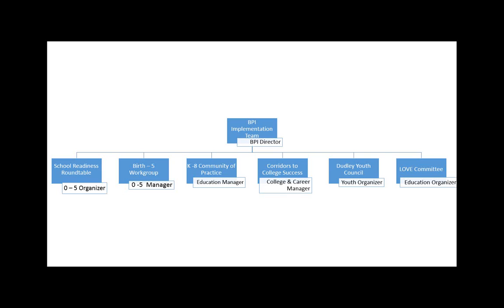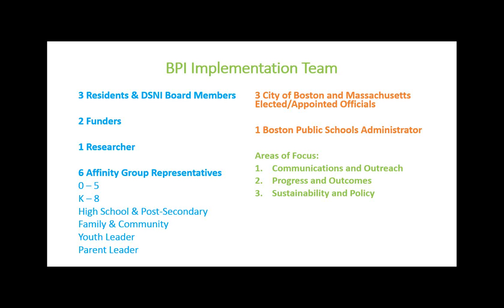That team has the charge of continuing to move Promise forward. It's separate from the actual DSNI board because the board is charged with governing all of DSNI — including our land trust work, housing advocacy, and more — whereas the implementation team is specifically looking at Promise indicators as well as our own indicators to assess whether we are being successful. It does that through three particular focus areas: communications and outreach, progress and outcomes, and sustainability and policy.